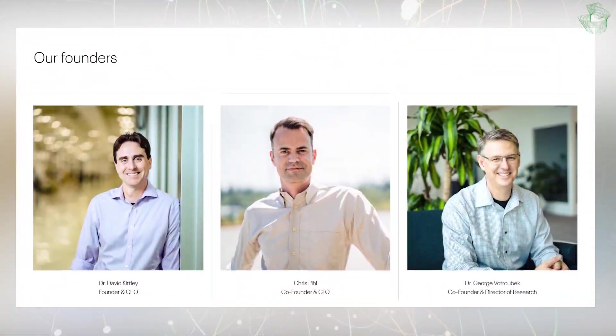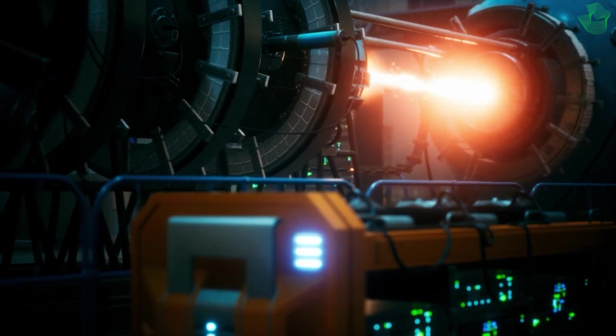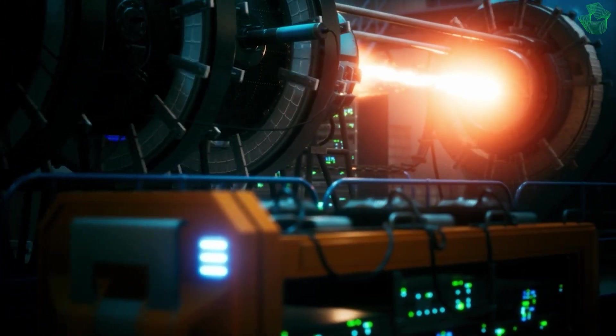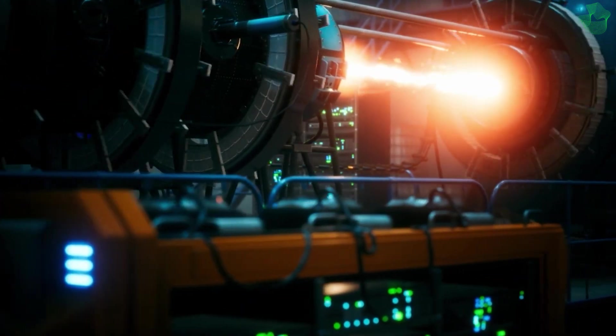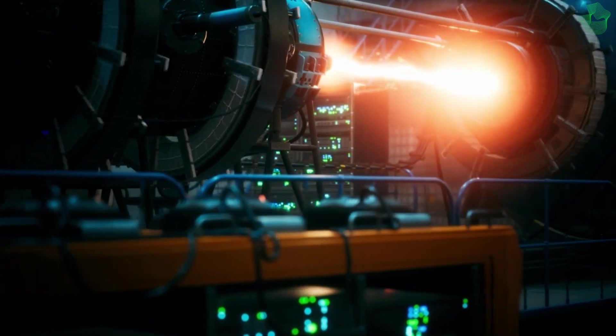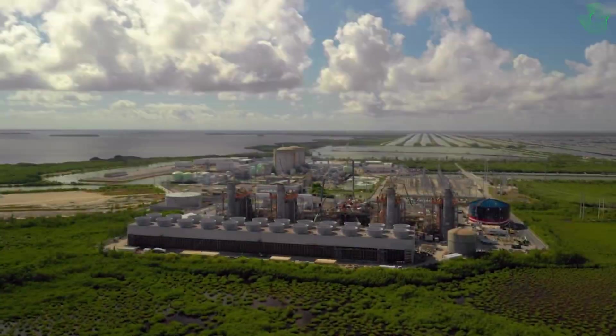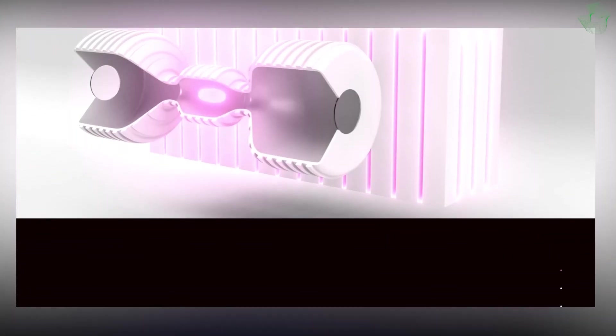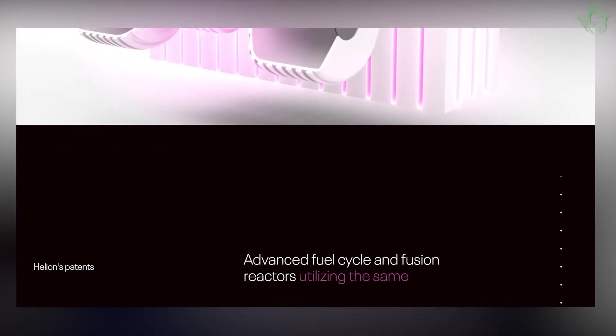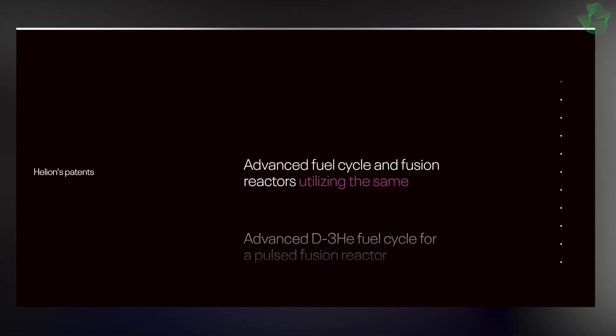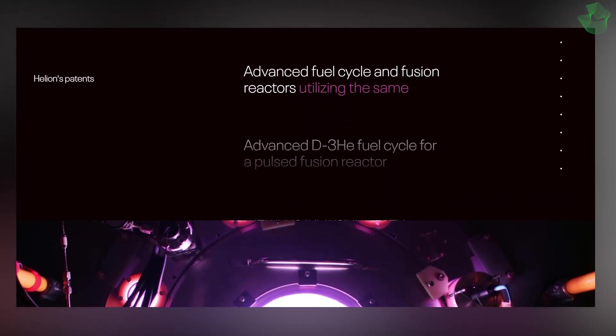In 2013, Kirtley co-founded Helion with Chris Phil, John Slow, and George Wotrebek. They were able to illustrate that there are truly new methods for fusion. These techniques take modern technology, electronics, fiber optics, and computers, that hasn't been applied to the fusion business as a whole. The funds from the round disclosed on Friday will be used to complete Polaris' development. Helion broke ground on this seventh-generation fusion reactor in July, and it plans to utilize it to demonstrate net energy production in 2024.